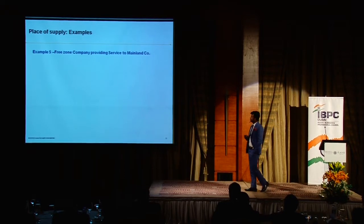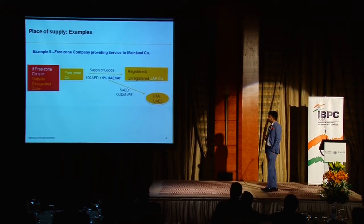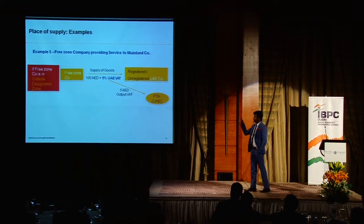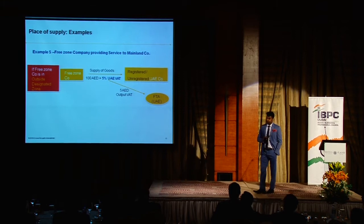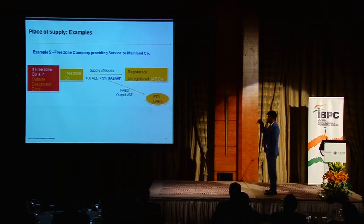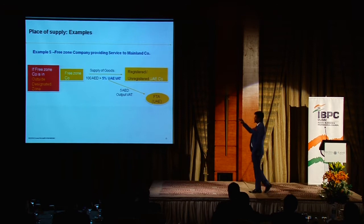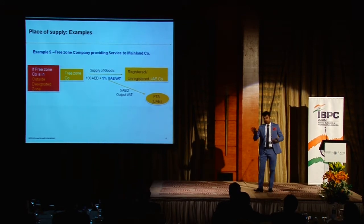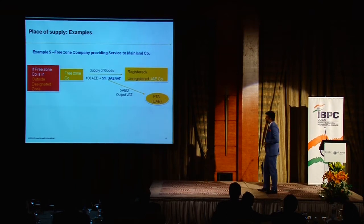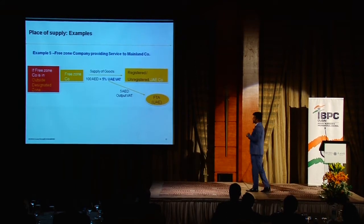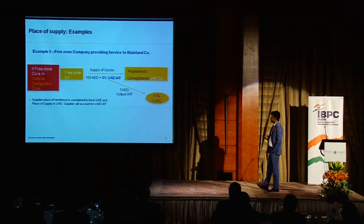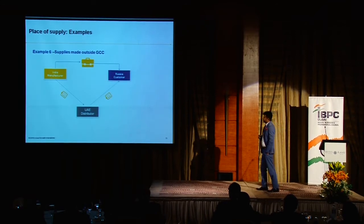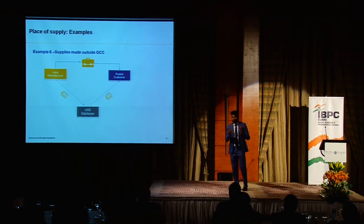If a free zone company is outside a designated zone, it is considered to be established in UAE and will charge 5% VAT directly. The place of supply is UAE and the supplier will account for the UAE VAT — though the executive regulation should confirm this interpretation.